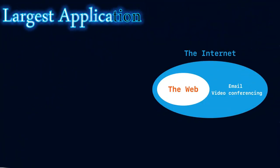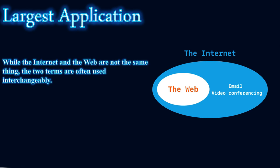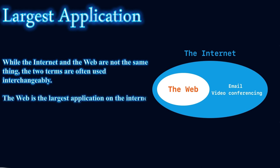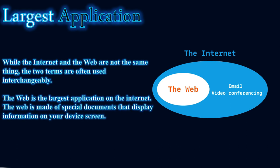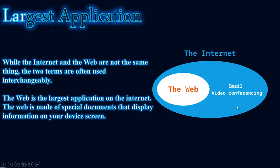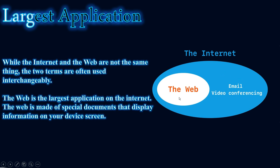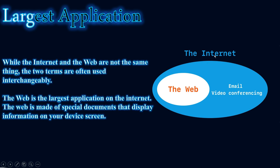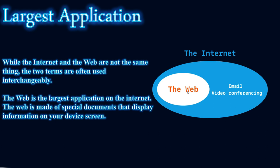The internet and the web are not the same thing — the two terms are often used interchangeably but they are different. The web is the largest application on the internet, made of special documents that display information on your device screen. The internet is the larger infrastructure, and the web is an application that lives inside it.